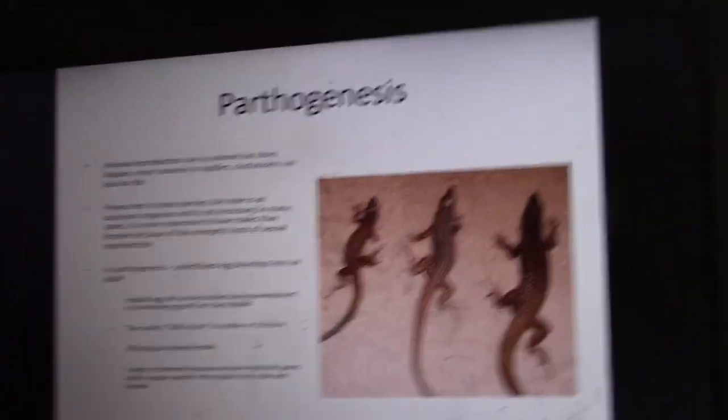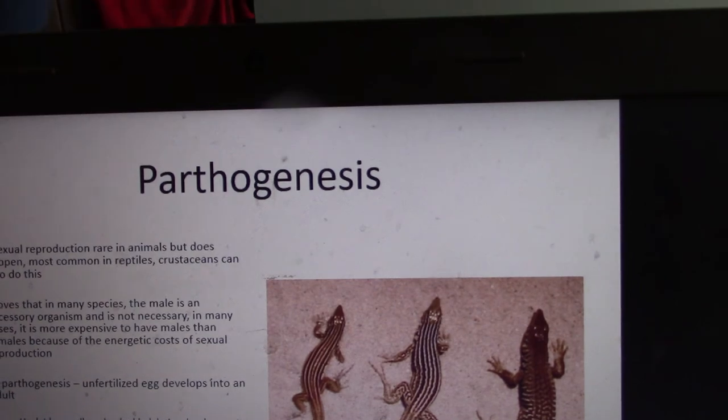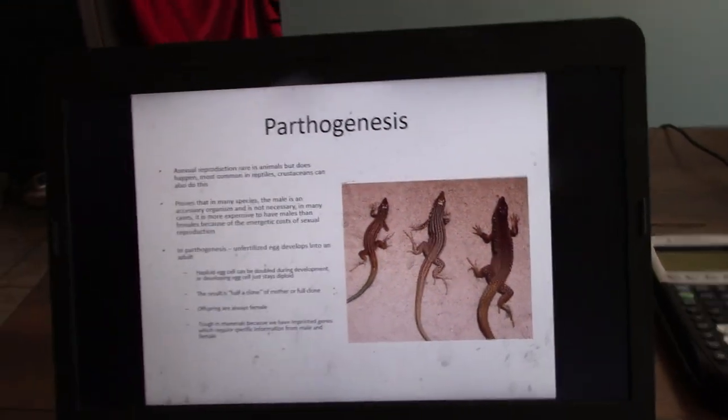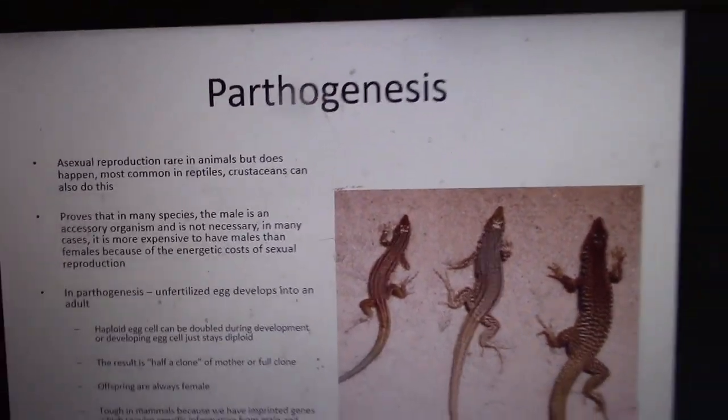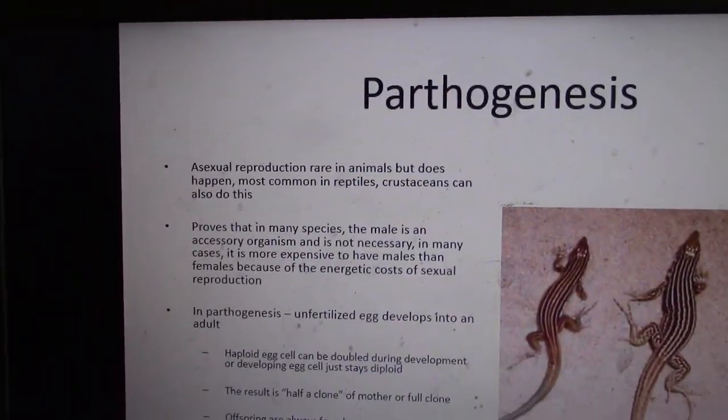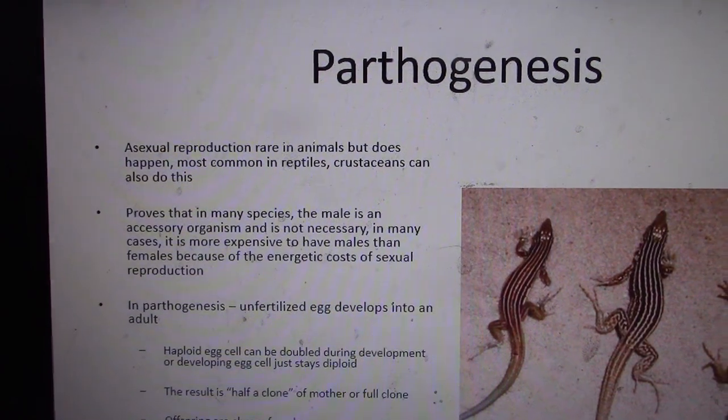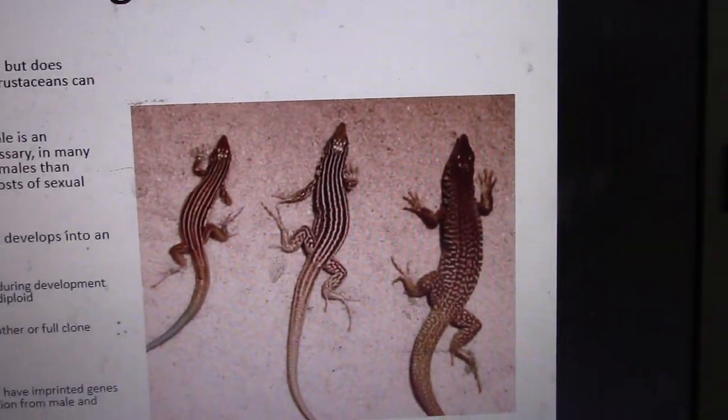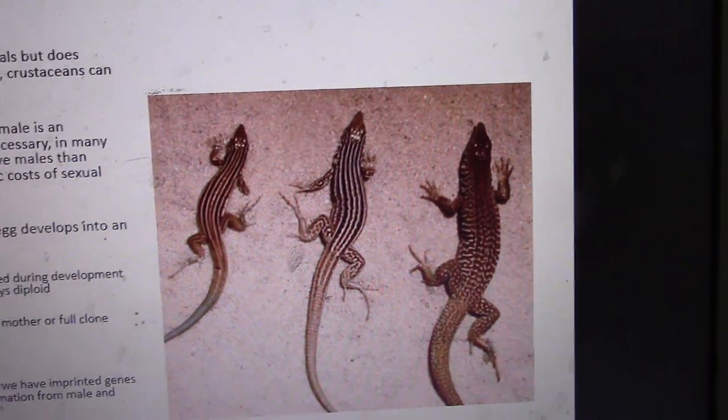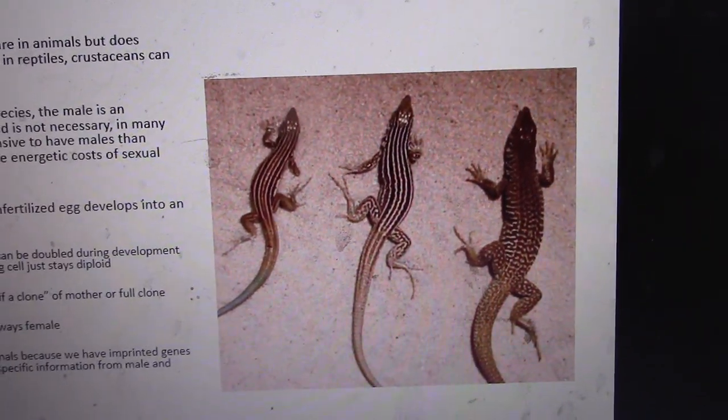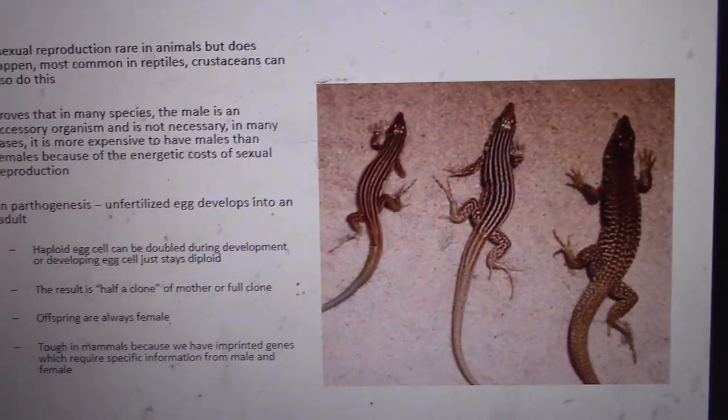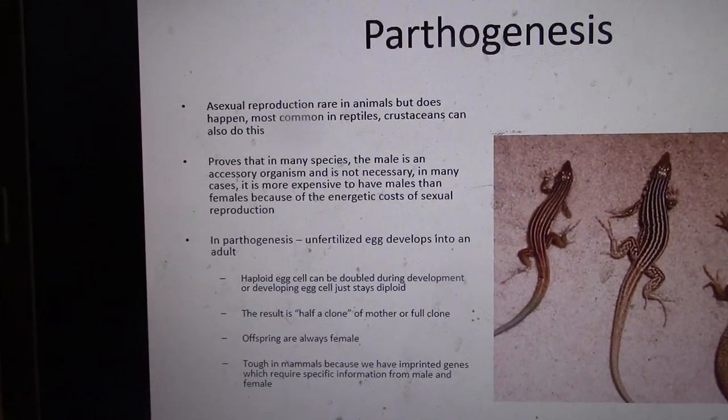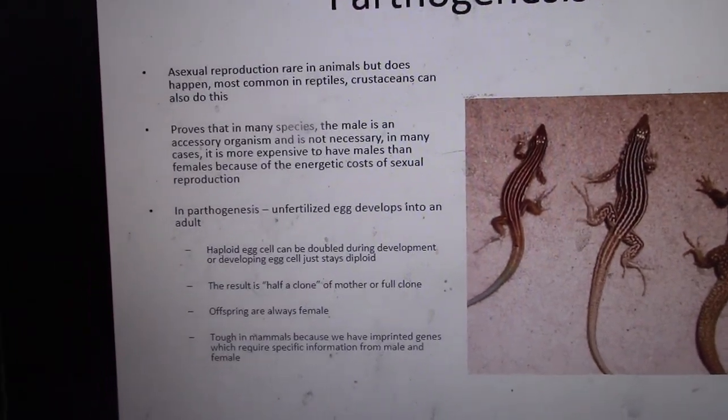But the most interesting type of asexual reproduction in eukaryotic organisms is parthenogenesis. You need to know this one well. Asexual reproduction is rare in animals, but these are skinks. This also happens in Komodo dragons. We've observed it in nurse sharks, rhesus monkeys, quite a few different types of complex animals.